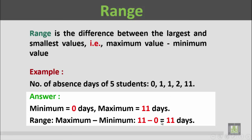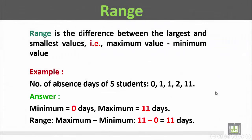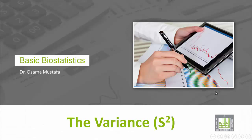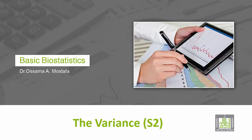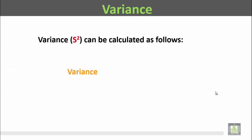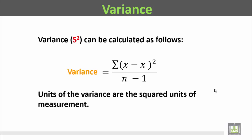So the range, the difference between the maximum and the minimum, 11 minus 0, is 11 days. The variance, or s squared, can be calculated as follows: the variance is equal to Σ(x minus x̄) squared divided by n minus 1. The units of the variance are squared units of the measurement.